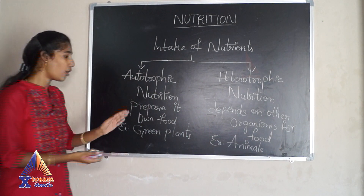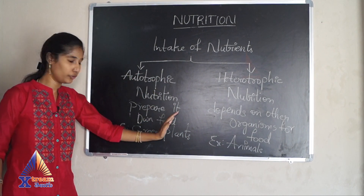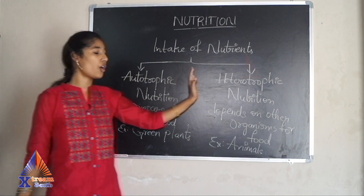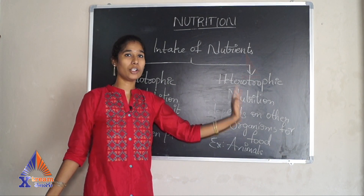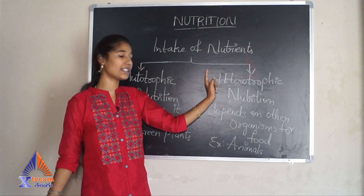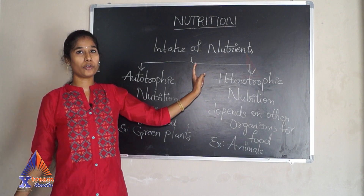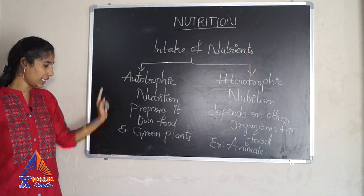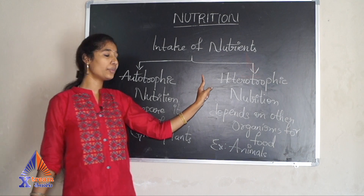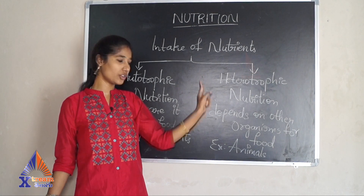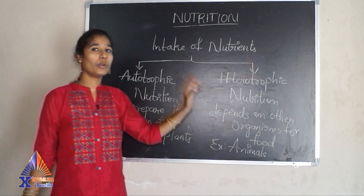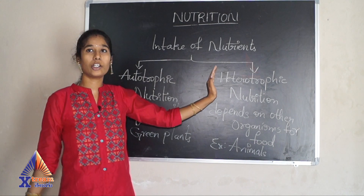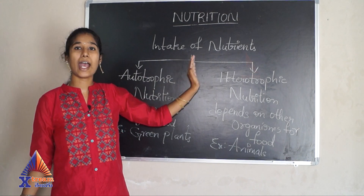Organisms which prepare their own food are called autotrophs, and organisms which depend on other organisms for food are called heterotrophs. The examples of autotrophic nutrition are green plants, and heterotrophic nutrition are animals. Now we will discuss in detail about autotrophic and heterotrophic nutrition and their differences.